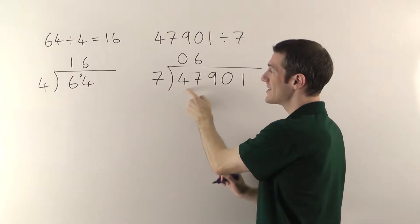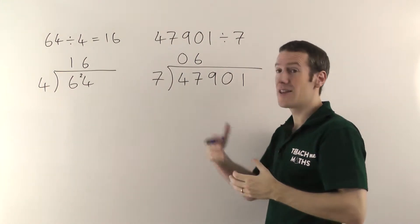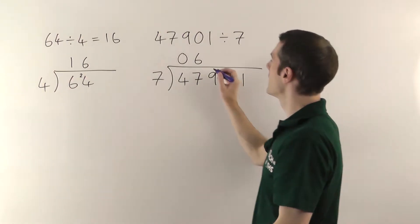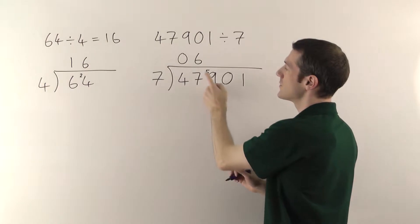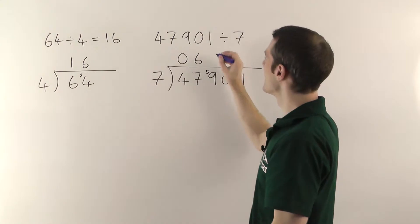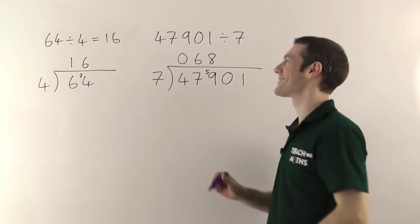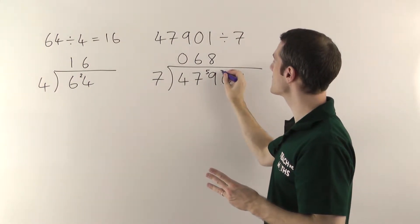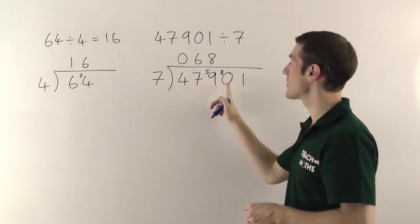Now if 6 sevens are 42, and we're actually dividing into 47, the difference between the 42 we've got and the 47 we need to get into is 5, so the remainder this time will be 5. You put it on the next column as always. So now we're doing 7s into 59. Now 7s into 59 will go 8 times. You write that there, because 7 eights are 56. So from 56 up to 59 is a remainder of 3. So you put that on the next column. That turns the 0 into a 30. Now you're doing 7s into 30.